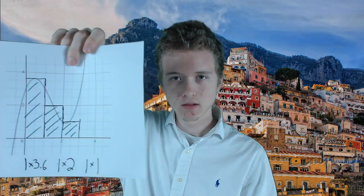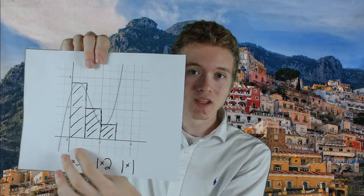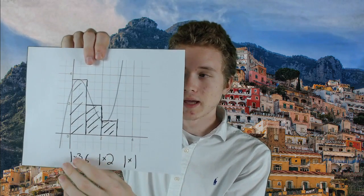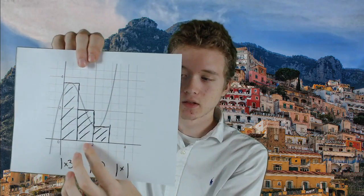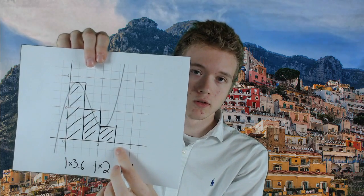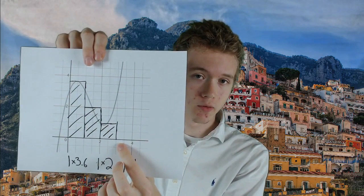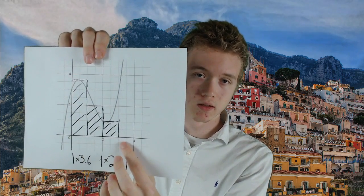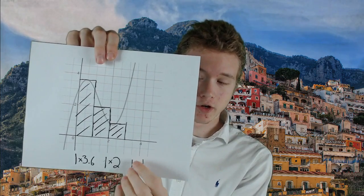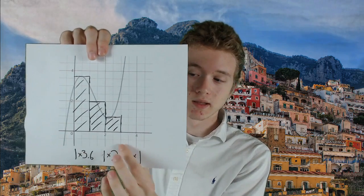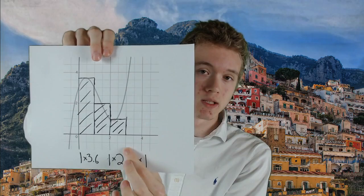We can also use this technique with more difficult looking curves. If we were to break this curve up into smaller rectangles, then what we could do is find the area of each individual rectangle. The width of each rectangle is 1 and the height of the rectangles are about 3.6, 2, and 1. So if you add up the area of the rectangles, which is 3.6, 2, and 1, then we get a total area under the curve of approximately 6.6 units squared.